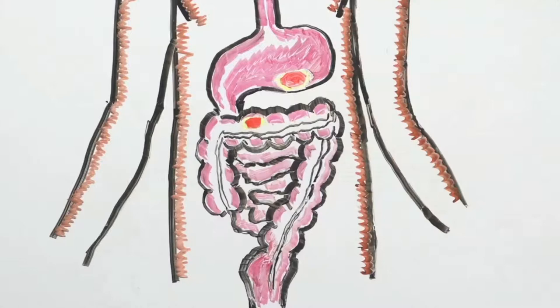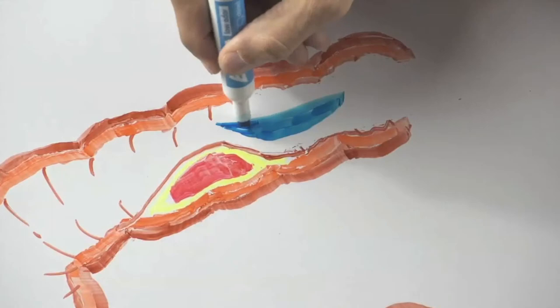Left untreated, the tumor may grow in other parts of the body. That's what doctors call metastatic, or advanced disease.